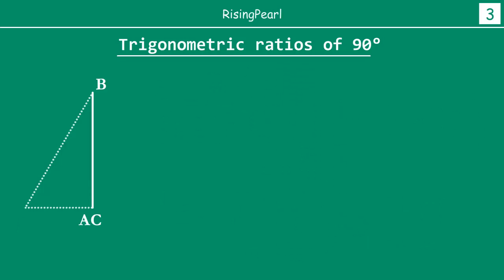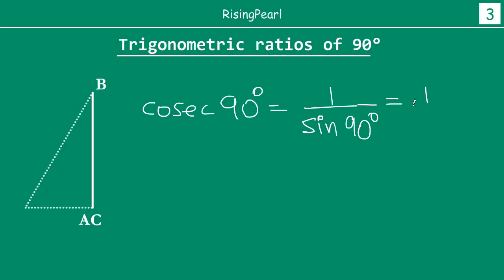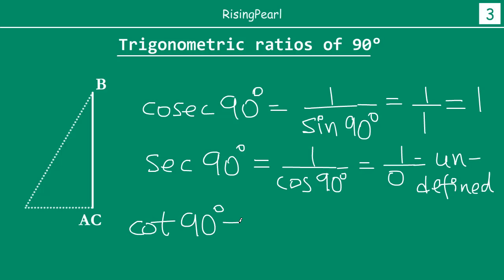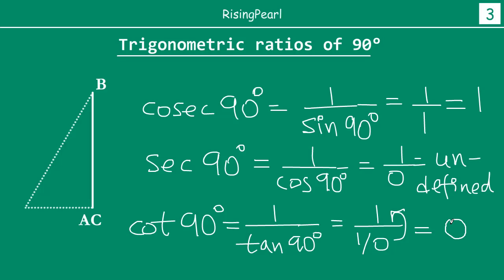Now we have the first 3 trigonometric ratios. It is straightforward to find the remaining ones. Cosec 90° is the reciprocal of sin 90°. Since sin 90° is 1, cosec 90° equals 1 divided by 1, which is 1. Sec 90° is the reciprocal of cos 90°. Since cos 90° is 0, sec 90° equals 1 divided by 0, which is undefined. Finally, cot 90° is 1 divided by tan 90°. Since tan 90° was 1 divided by 0, the 0 comes to the numerator here, so cot 90 degrees equals 0.